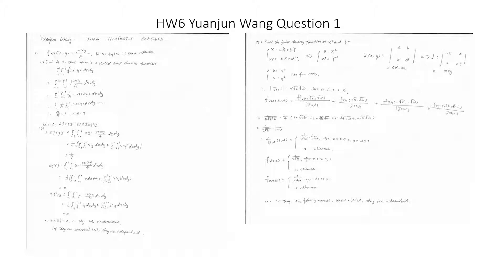For E[X], it equals the integral from negative one to one of the integral from negative one to one of x times (1 + xy)/4 dx dy, which equals zero. E[Y] equals the integral from negative one to one of the integral from negative one to one of y times (1 + xy)/4 dx dy, which also equals zero.